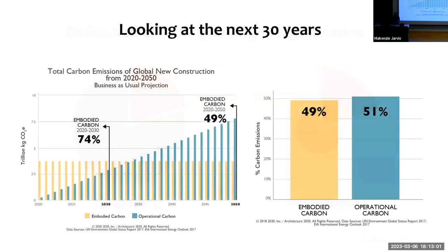On top of that, we have a new timeframe. It's not about the whole life of a building — which could be 75 years. We only have until 2050. That's when the international scientific community has rallied around the understanding that we have to be carbon neutral, especially from our built environment. If we only look at the next 30 years, embodied carbon is a much larger portion of new construction.